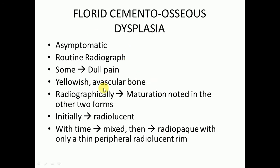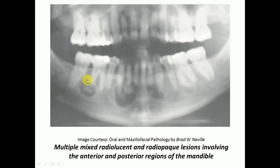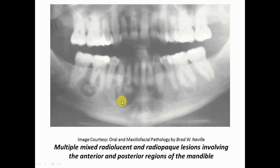One very important feature of florid cemento-osseous dysplasia is that it may show yellowish avascular bone. Radiographically, similar to the other two forms, lesions are initially radiolucent, then become mixed, and then radiopaque with only a thin peripheral radiolucent rim. Here you can see yellowish avascular cementum-like material beginning to exfoliate through the oral mucosa and the radiolucent and radiopaque mixed lesions present over the periapical areas.